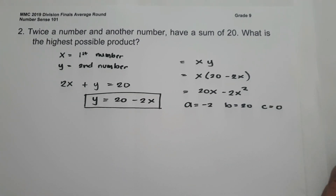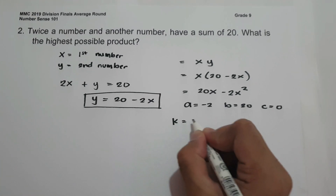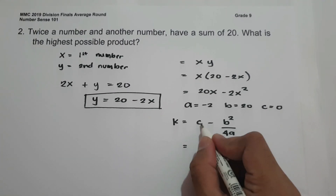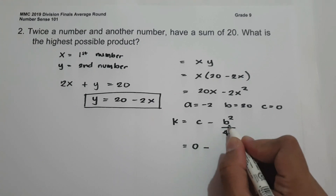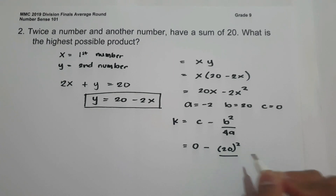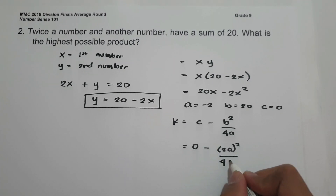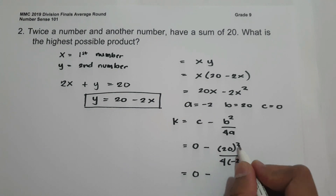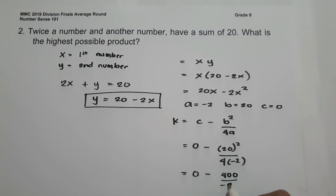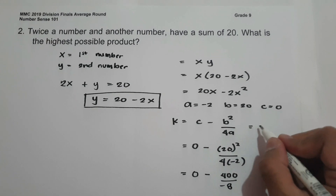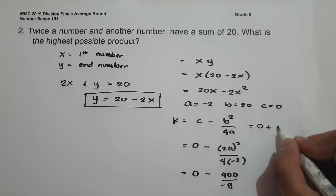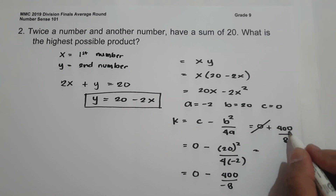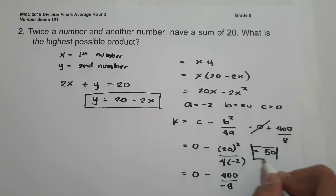To find the highest possible product, let us use the formula k equals c minus b squared over 4a. The value of c is 0, b is 20, and a is negative 2. So this gives us 0 minus 400 divided by negative 8. Negative divided by negative is positive, so 400 over 8 equals 50. So 50 is the highest possible product, and this will be our answer.